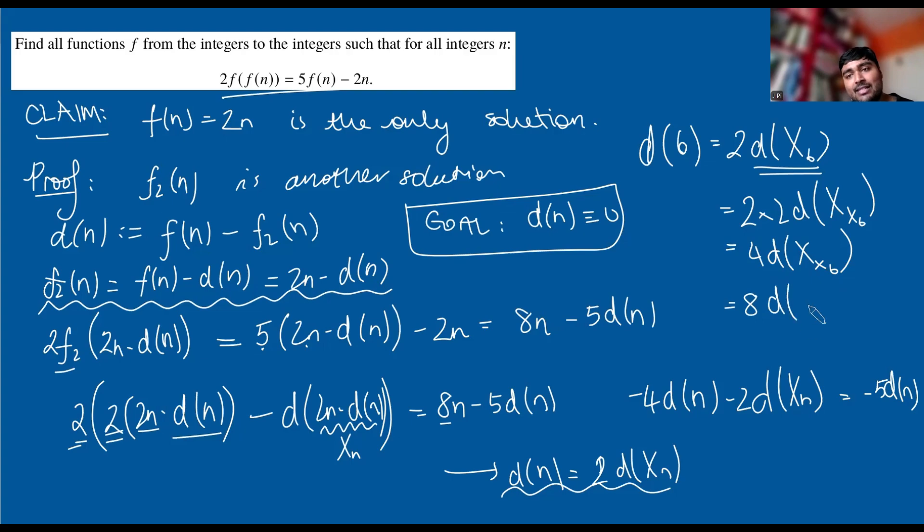We can repeat this to get that this is 8d(x(x(x(6)))) and keep going. Now, since this function d is two f's subtracted from each other and f is from the integers to the integers, when you subtract two integers you get an integer, we know that d of any number must be an integer. So we can repeat this process and get that d(6) is some power of 2 times an integer. But this works for every single power of 2. Therefore, d(6) must be a multiple of 2, a multiple of 4, a multiple of 8, a multiple of 16, a multiple of 32 and so on. That works for any power of 2 you choose.